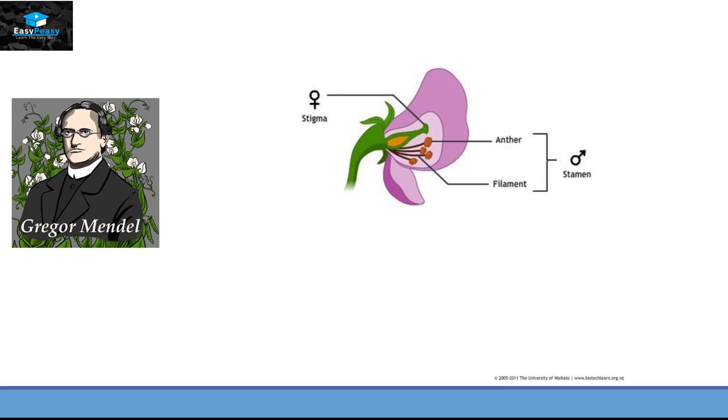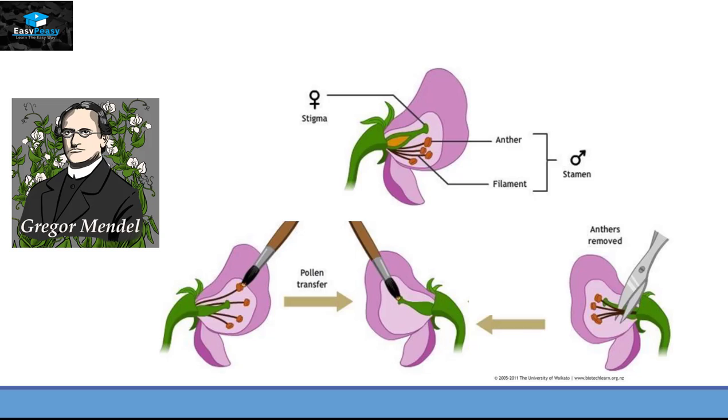What Gregor Mendel did was that he removed the anthers of one plant and made it a female flower. Then he took another flower and brushed the anthers of that flower to the stigma of this flower in order to fertilize it. This process is called cross pollination.